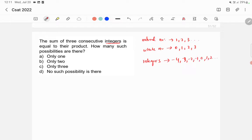The sum of three consecutive integers is equal to their product. Let's check how many possibilities are there. First, everyone will know this one: 1+2+3. These are three consecutive numbers. 1+2+3 = 1×2×3 = 6.